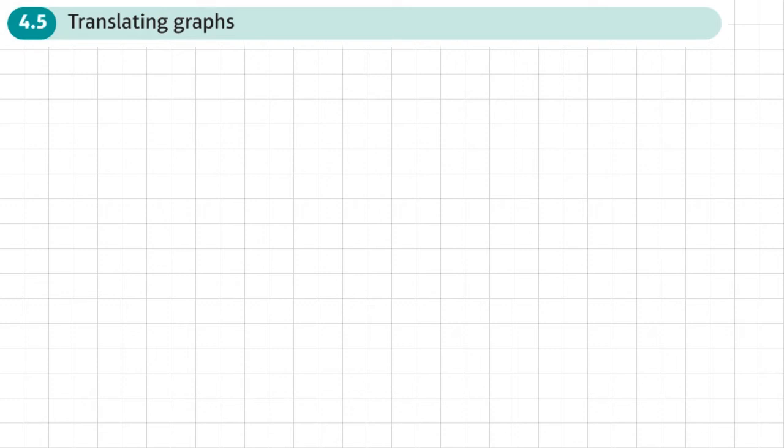This is the fifth section of chapter four on graphs and transformations, and this section is about translating graphs. There are two different types of translations that we need to know about.